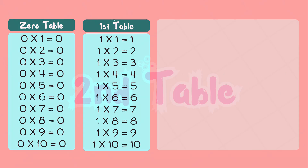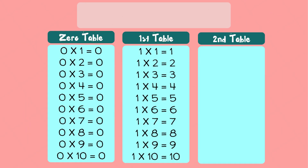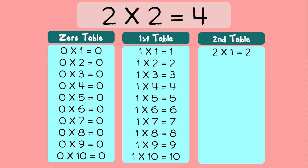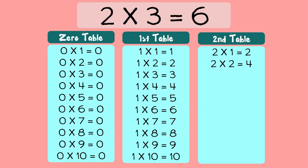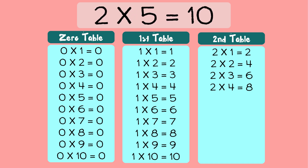Okay kids, next we will learn the second table. Two one's a two. Two two's a four. Two three's a six. Two four's a eight. Two five's a ten.